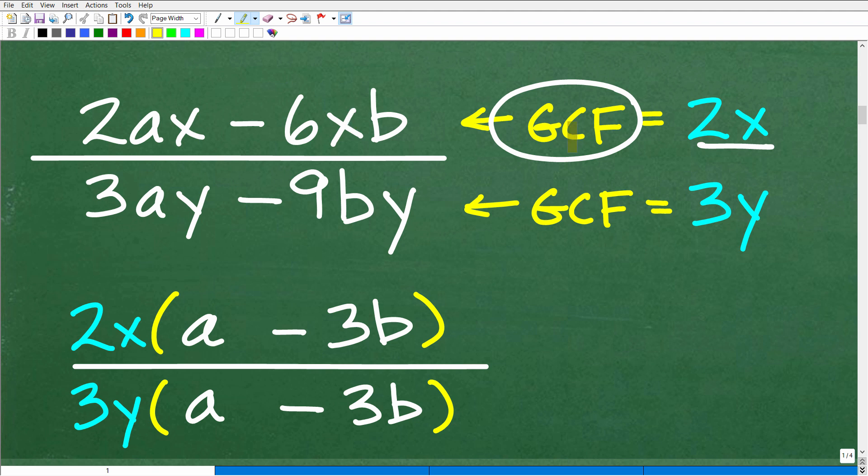Well, 2 and x. And then here, I have an x right here. And then 6 is the same thing as 2 times 3. So in terms of common factors, 2, they have a 2 in common and an x in common. So the GCF here is 2x. And then down here in the denominator, the GCF is a 3y.